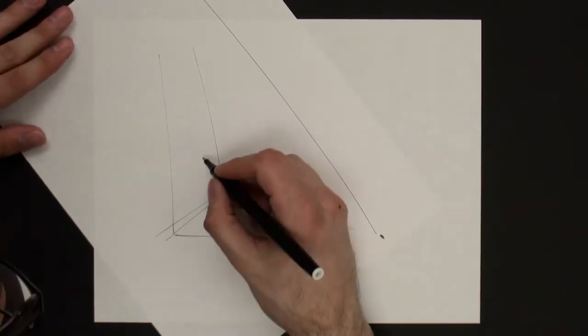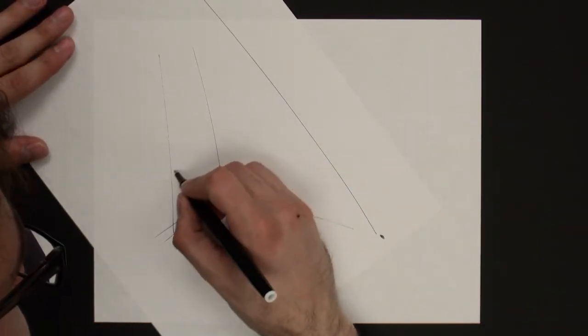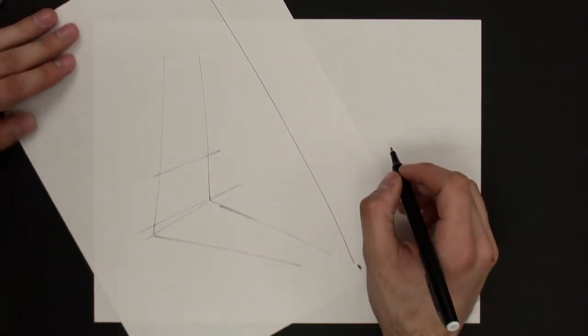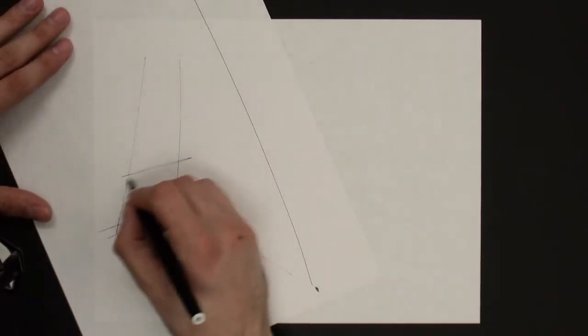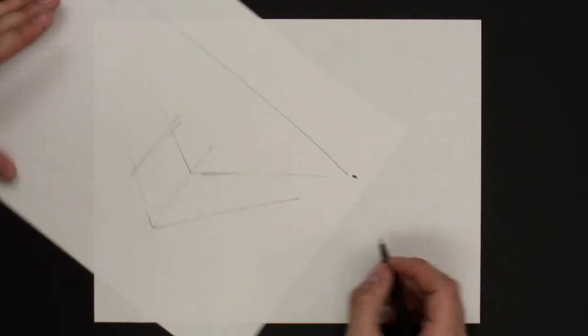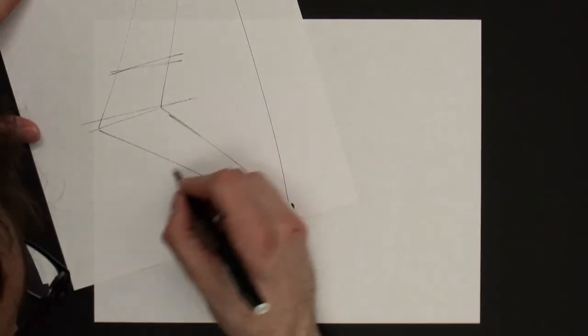Okay, and we'll get these other vertical edges in. So I want this edge to be square. And then this one can be a little bit elongated.